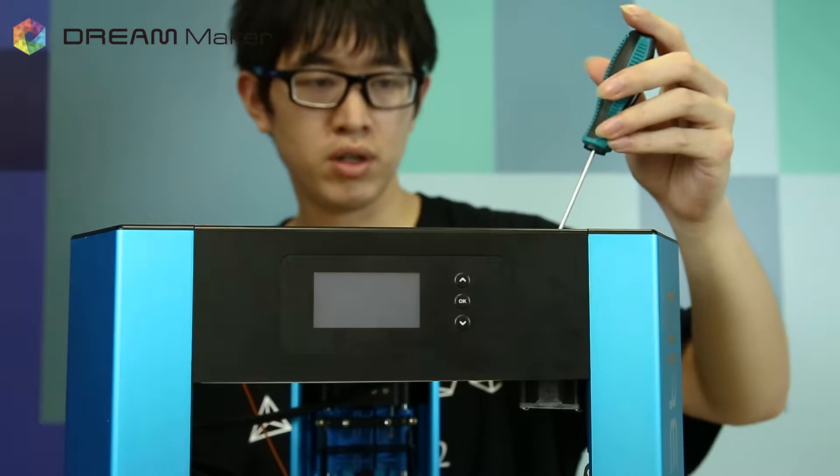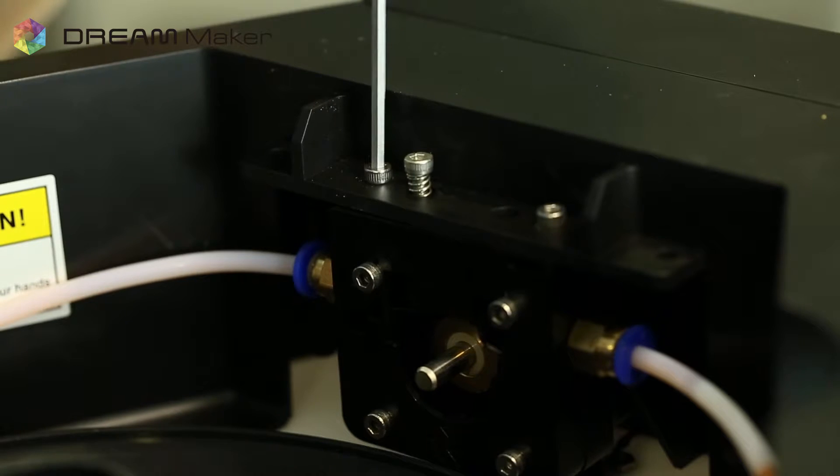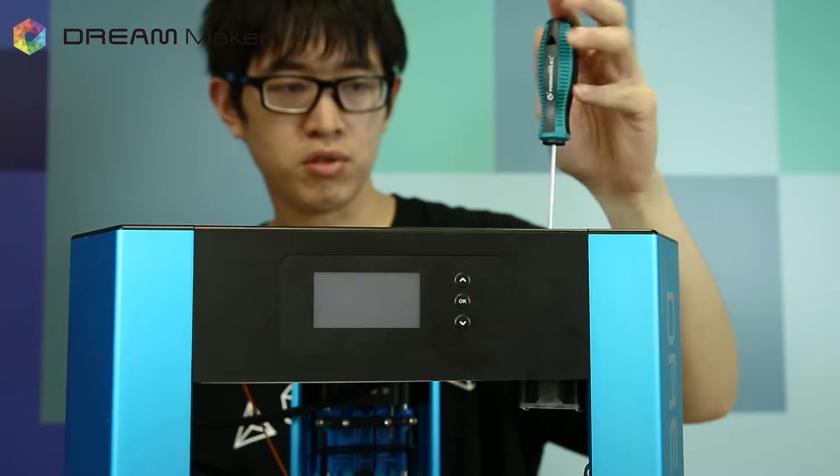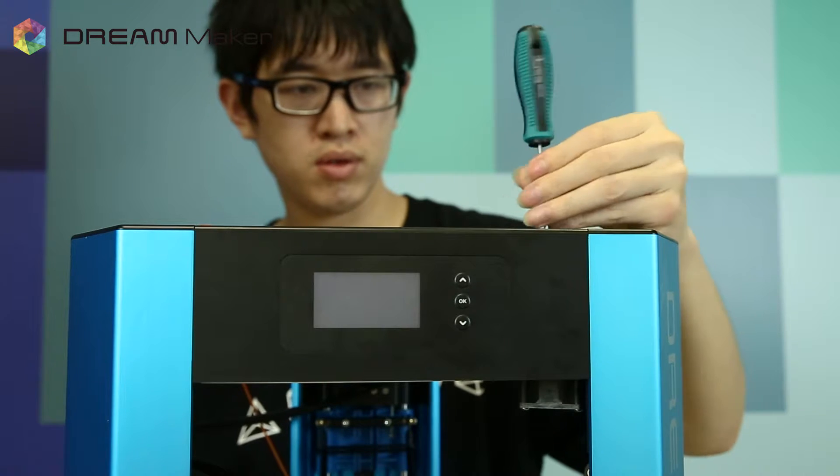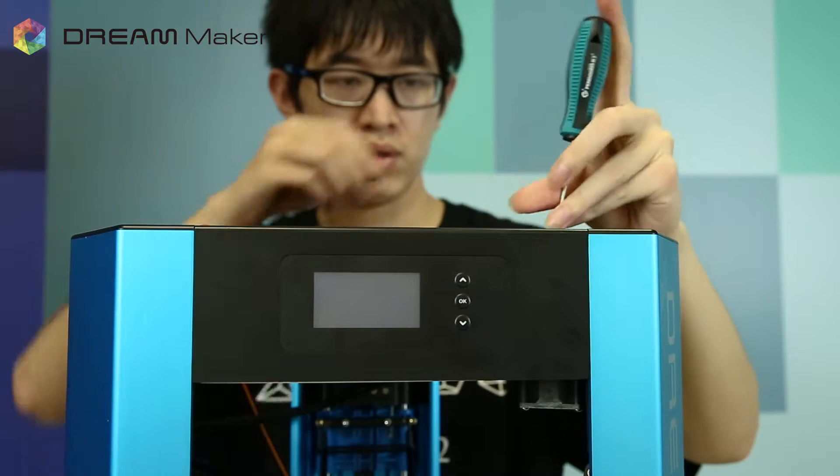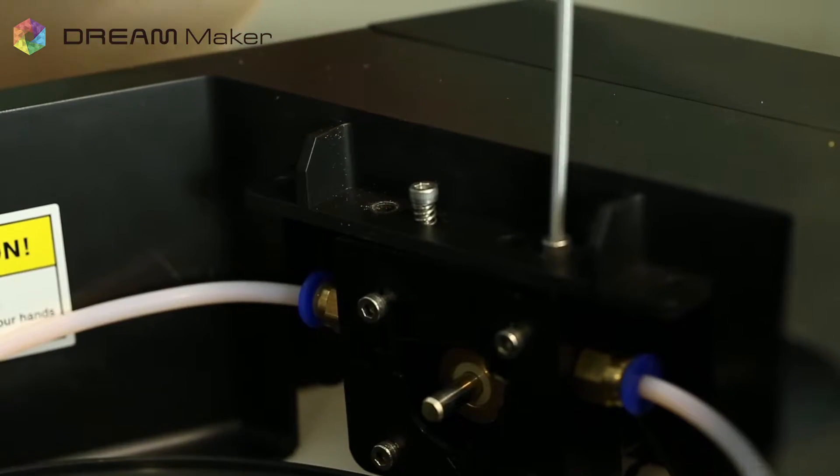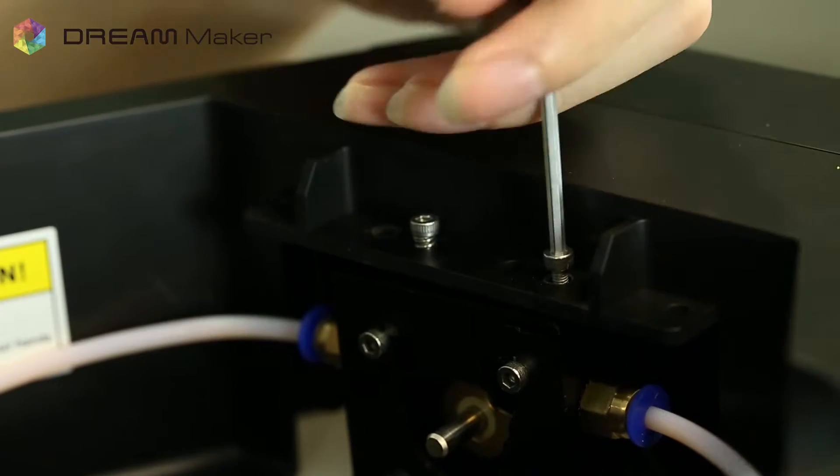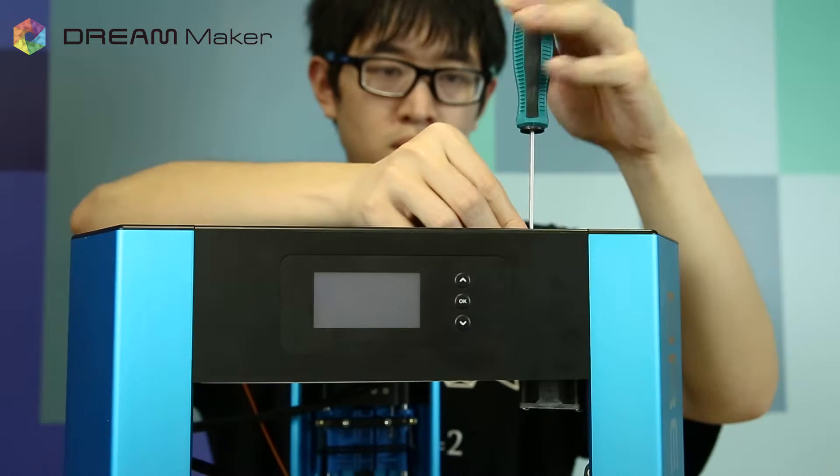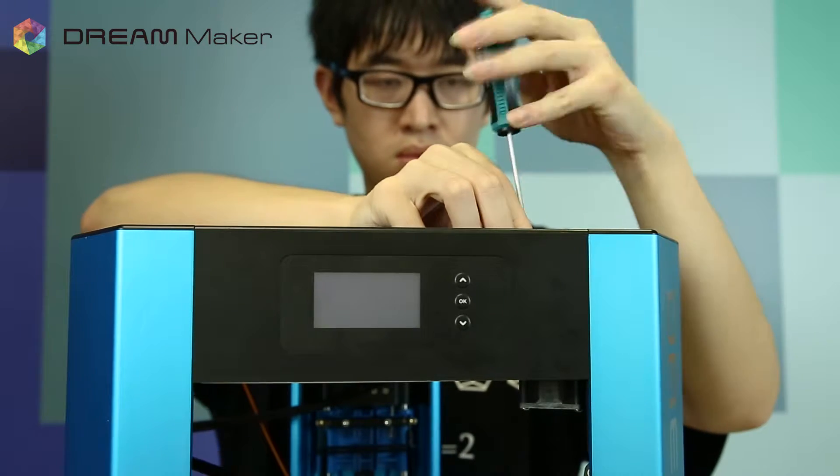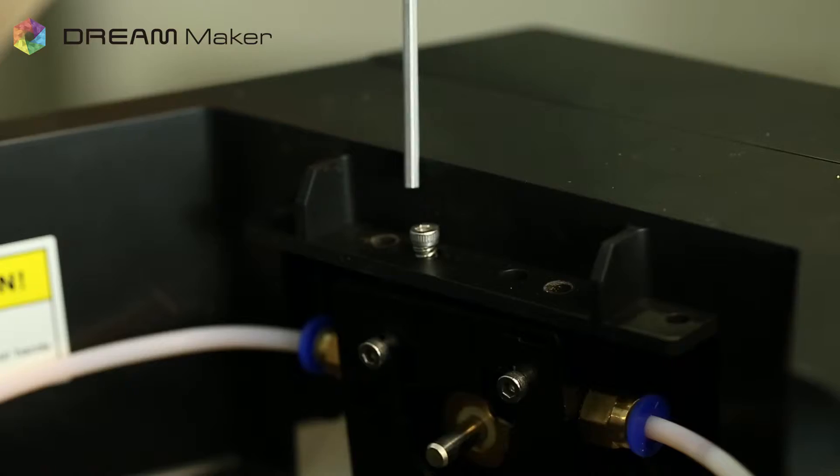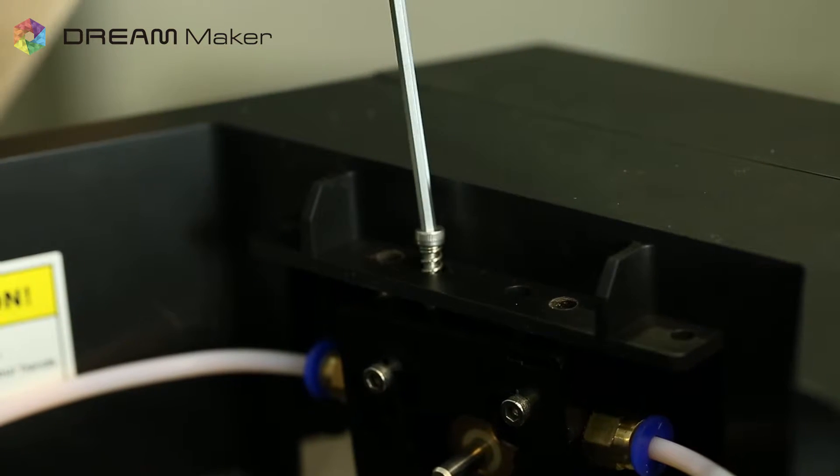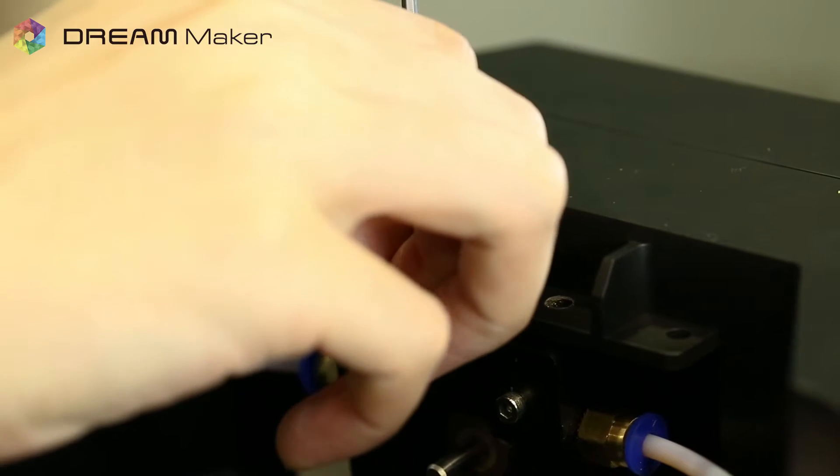So first, you're going to need to remove the two top screws that are aside of the pressing screw, and then remove the pressing screw. Always make sure to keep these screws at the right place.